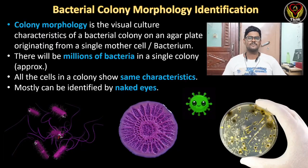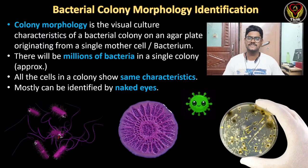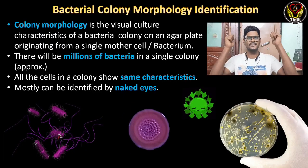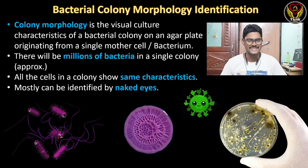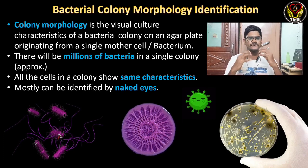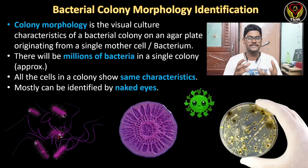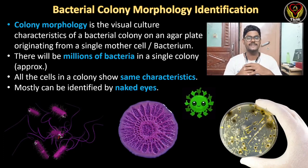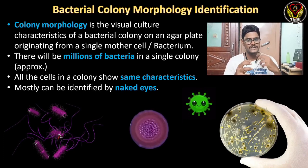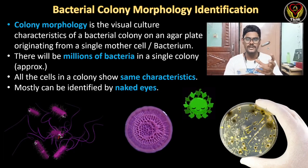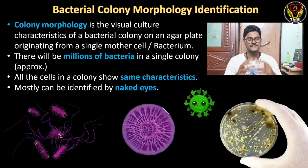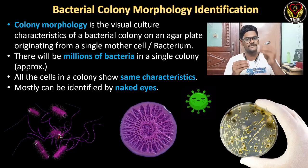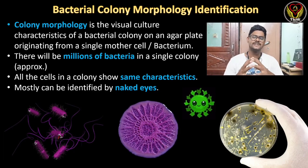In this video we are going to discuss about an important aspect in microbiology which is colony morphology identification. We grow bacteria in a petri plate, but to identify what type of bacteria it is, we have to identify its colony morphology. That is the first step to identify a bacteria.